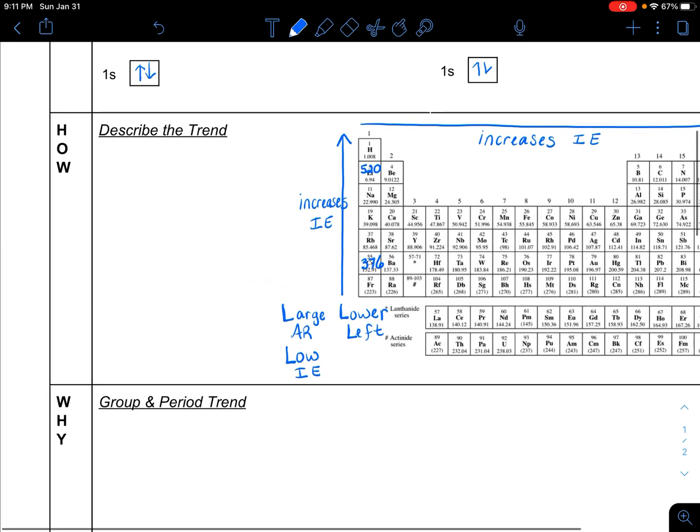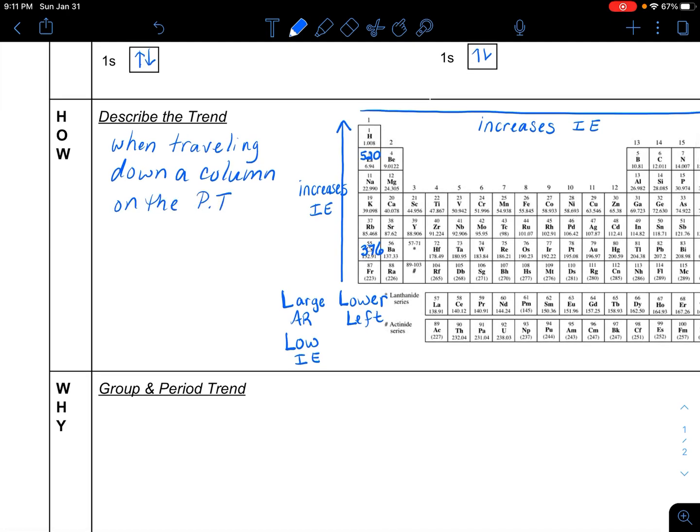So let's just quickly describe the trend in words. And I'm just going to use the word traveling. So when traveling down a column on the periodic table, the ionization energy decreases. So I'm going to write kind of the opposite of what I have in the chart. And then we could also say when traveling from right to left in a row, the ionization energy again decreases. So I'm kind of writing the sentence backwards.